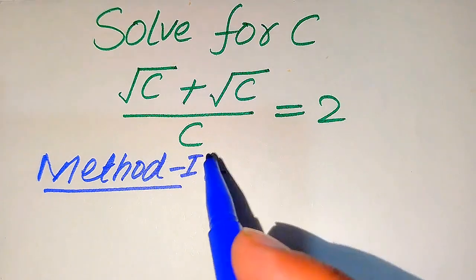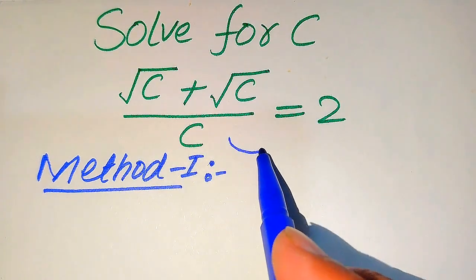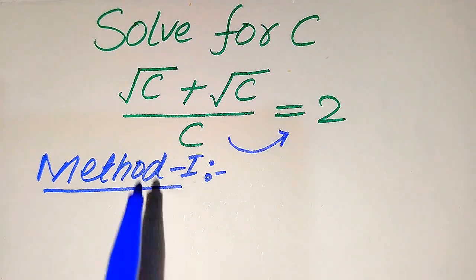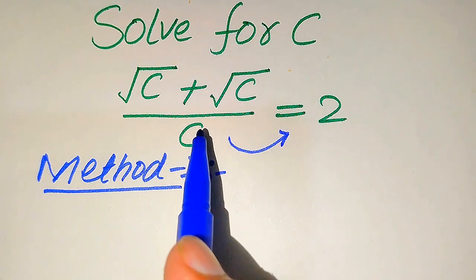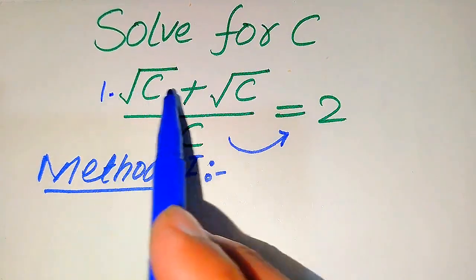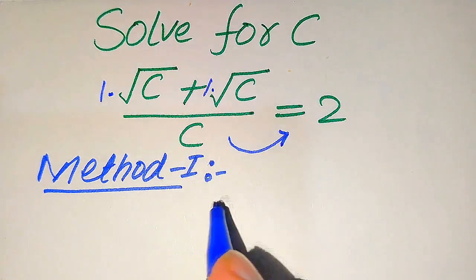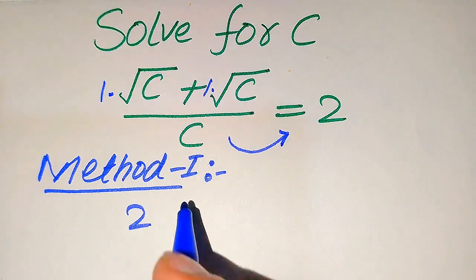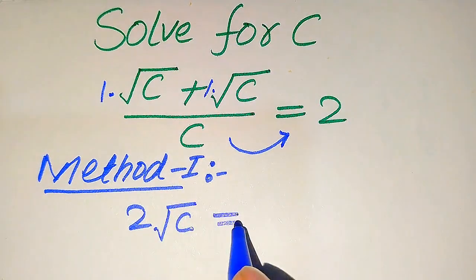In the first method, you see that C is in the denominator, so we move C to the right-hand side. If you focus on the numerator terms, you see that these are two same variable terms added together, so we add the coefficients. The coefficient of each term is 1, so after adding the coefficients it becomes 2 times the square root of C.